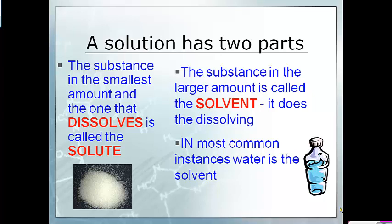A solution has two parts. It has the substance that's being dissolved — that's called the solute — and the thing you are dissolving the solute in is called the solvent. In most cases the solvent is water, but not always. For example, if I had sugar and tea and wanted to make sugared tea, the solute would be the sugar and the solvent would be the tea. Same with salt water: the salt is the solute and the water is the solvent. Whatever you're dissolving is the solute; whatever it's being dissolved in is the solvent.